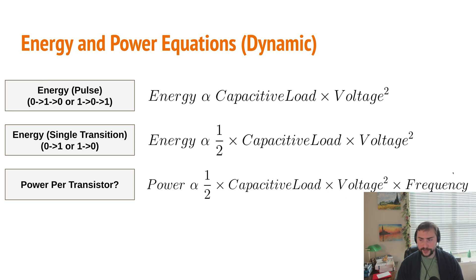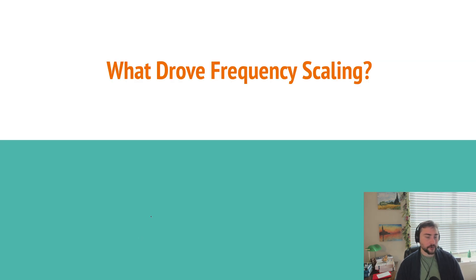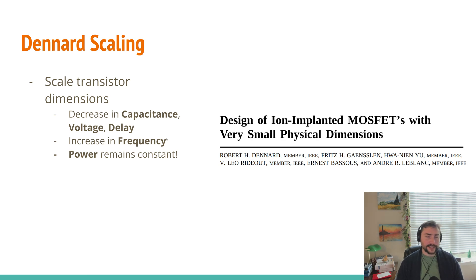An important thing to think about here is frequency. Clearly, as we're increasing our frequency, we're also going to be increasing our power. So a natural question to ask is, what actually drove frequency scaling? Why were we able to increase our frequency by 1,000x, but not also increase our power required by 1,000x?